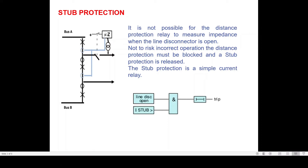This symbol 'greater than Z' means the distance protection. The CVT input is connected to the distance protection relay, and as you can see, the CVT is placed after the line isolator towards the line side. Another input to the distance protection relay is through the current transformer from the main bay and tie bay in parallel. When the 89L isolator or line isolator is open, the CVT voltage will not reach the distance protection relay, and once the CVT voltage is not available, the calculation of Z = V/I will not be carried out by the relay, or the chances of distance protection relay mal-operation are very high.